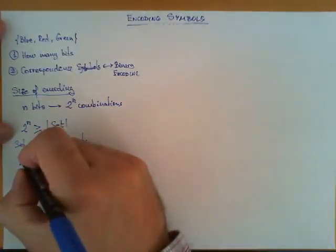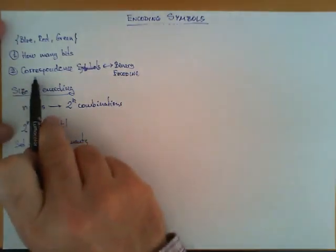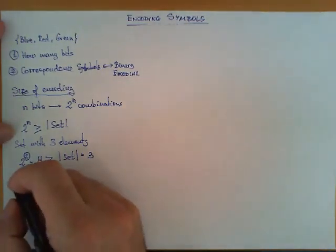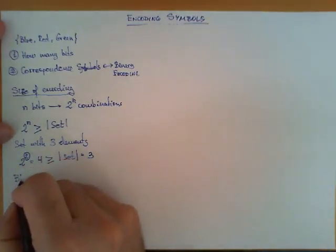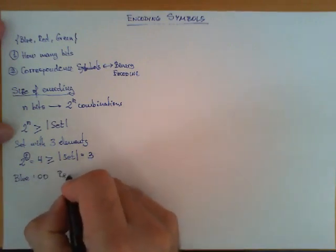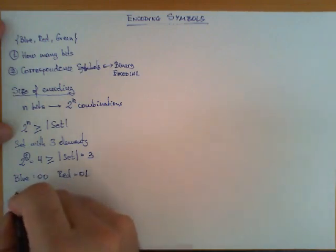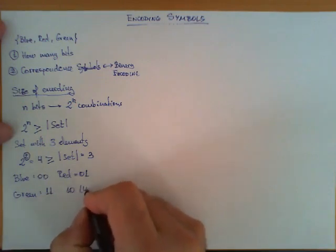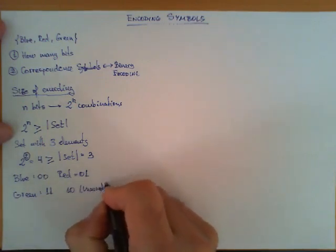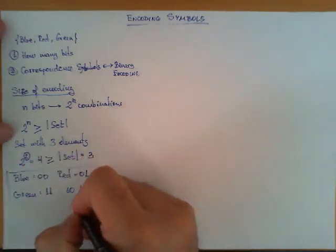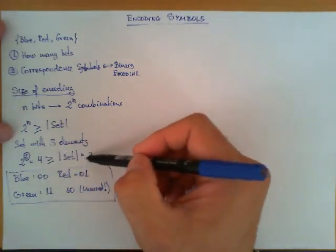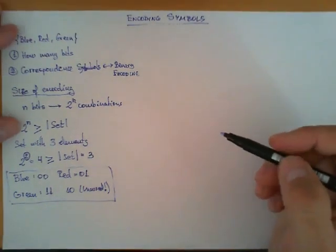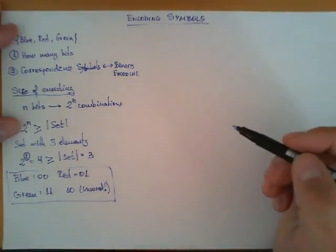I could use many more bits like 10 or 15 bits, because as long as I have three possible combinations my encoding is possible. So this is step number one, I already decided that I'm going to use two bits. Step number two, I need to define this correspondence between symbols and binary codes. In our example we can define that we want to encode blue as 00, red as 01, green as 11, and the combination 10 in this case is unused.